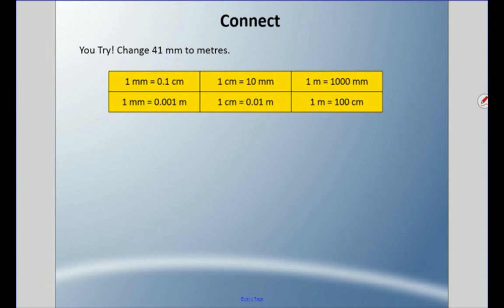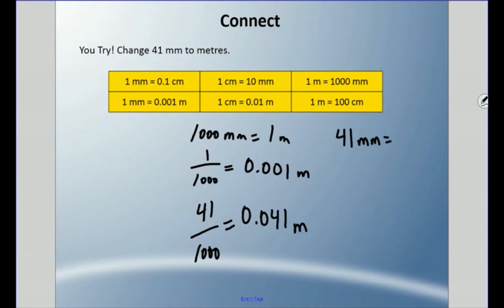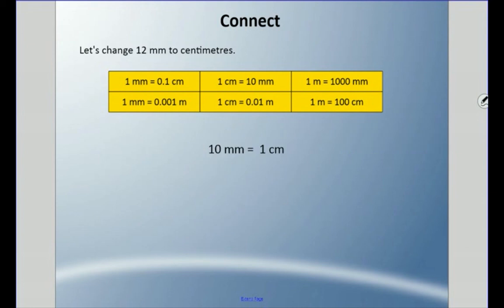Try this one: change forty-one millimeters to meters. Pause it and come back when you're ready. Remember, one thousand millimeters equals one meter, so one millimeter is one thousandth of a meter. We're dealing with forty-one, so forty-one out of one thousand. Forty-one millimeters equals forty-one thousandths of a meter — 0.041 of a meter.